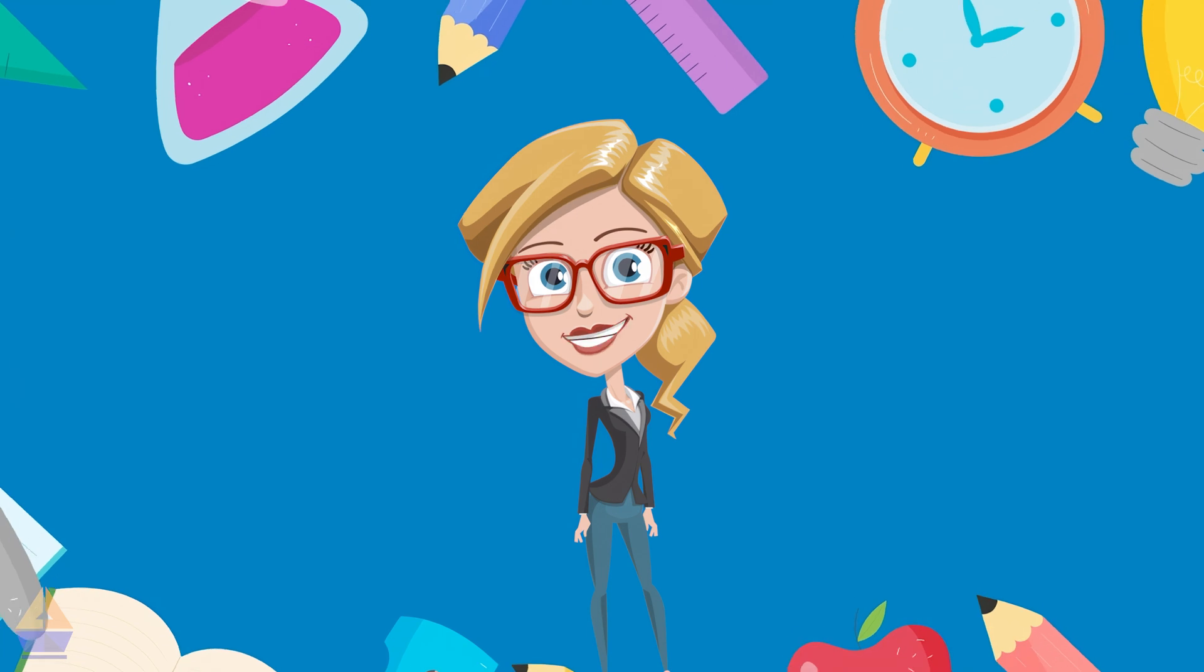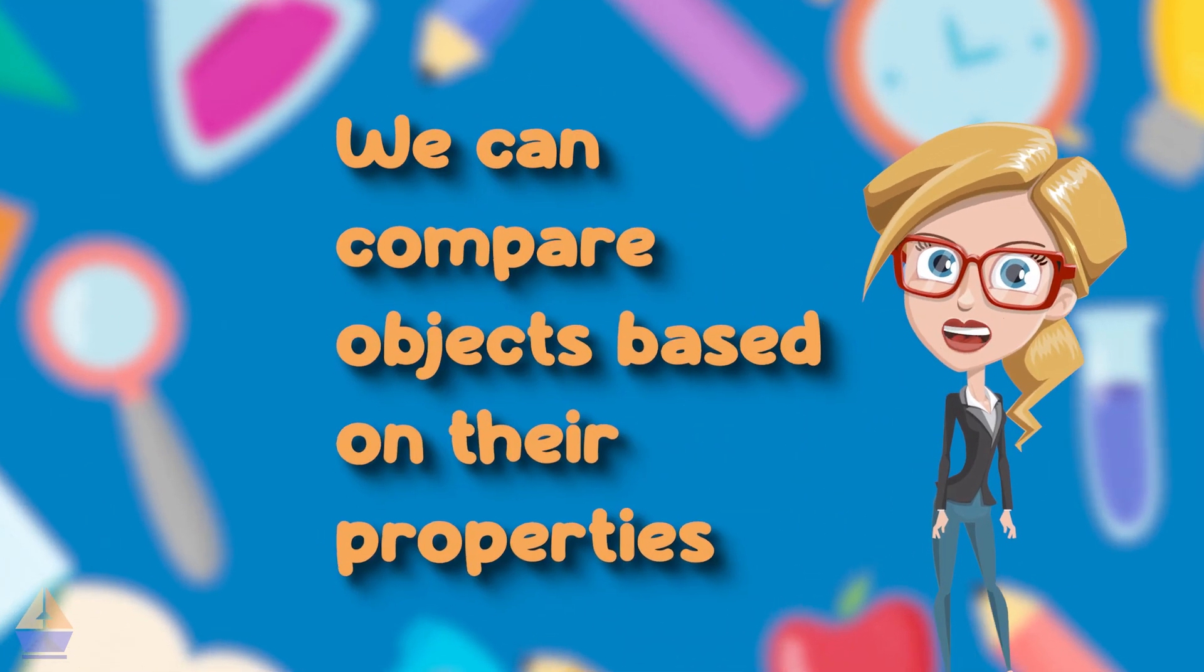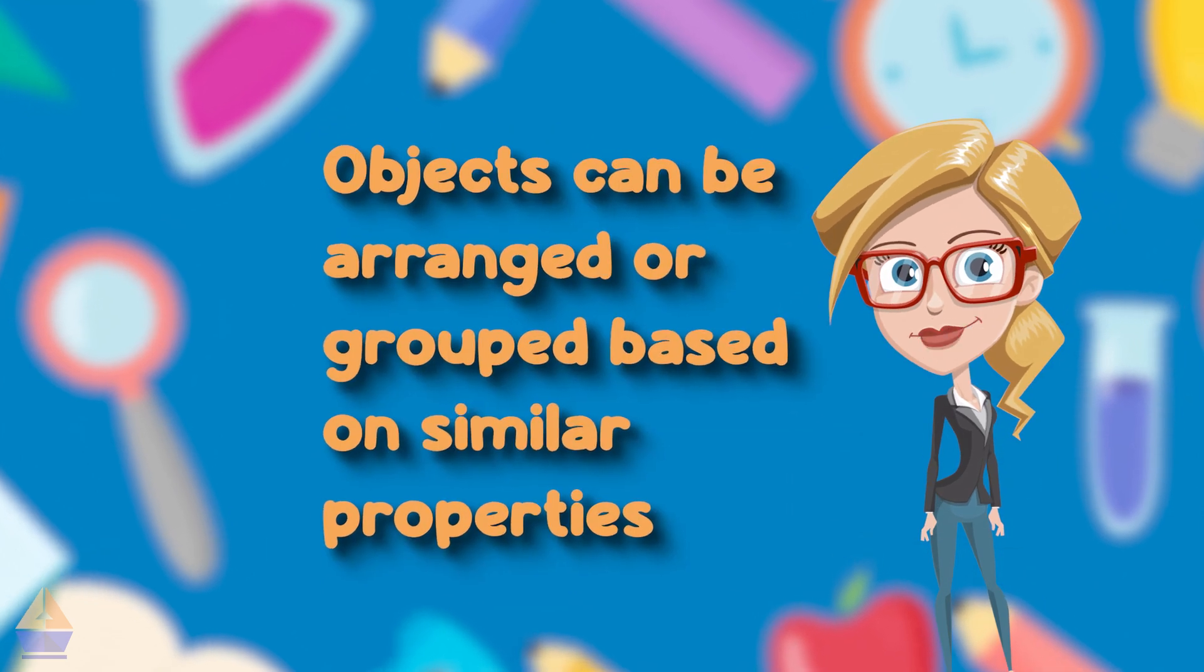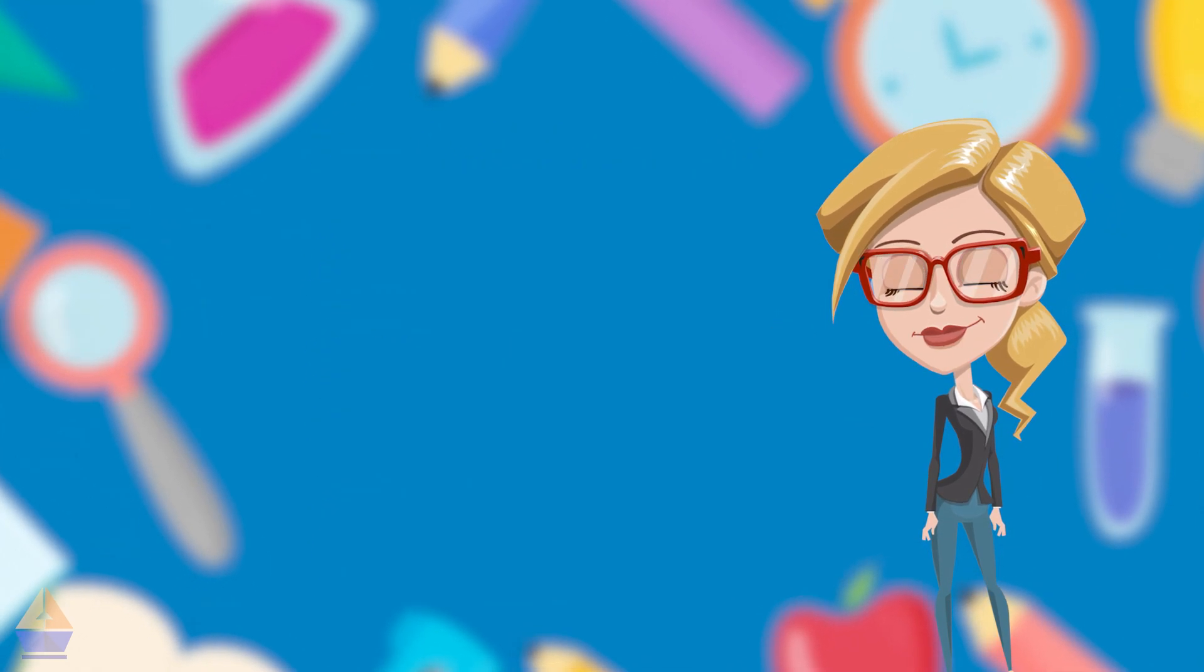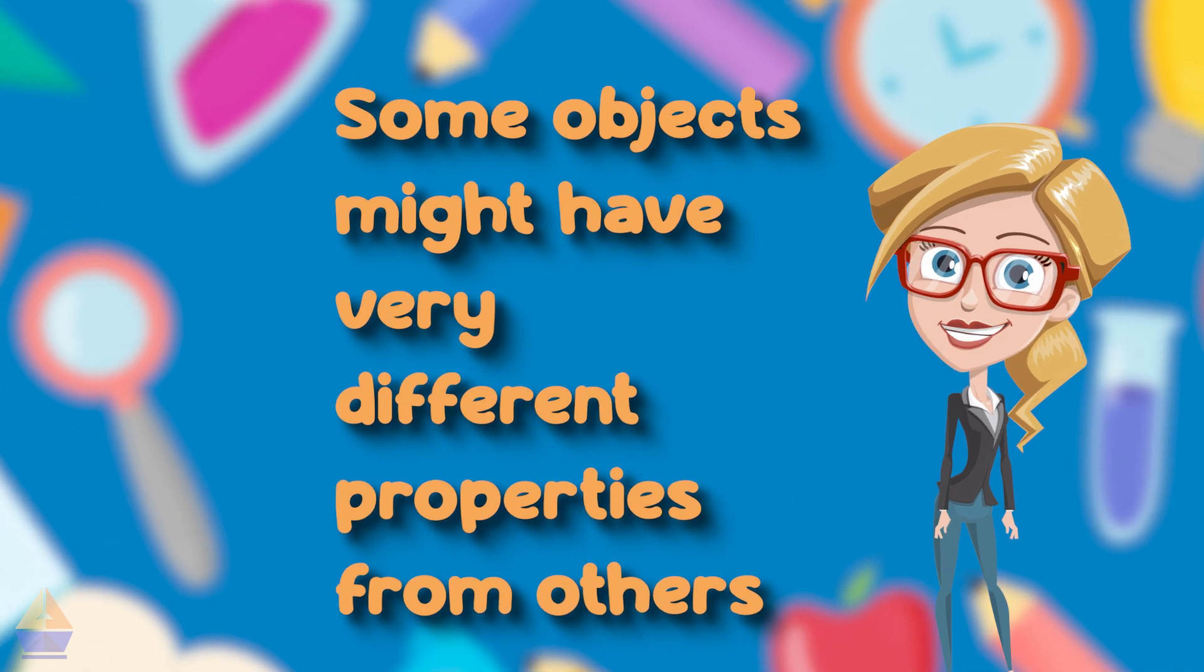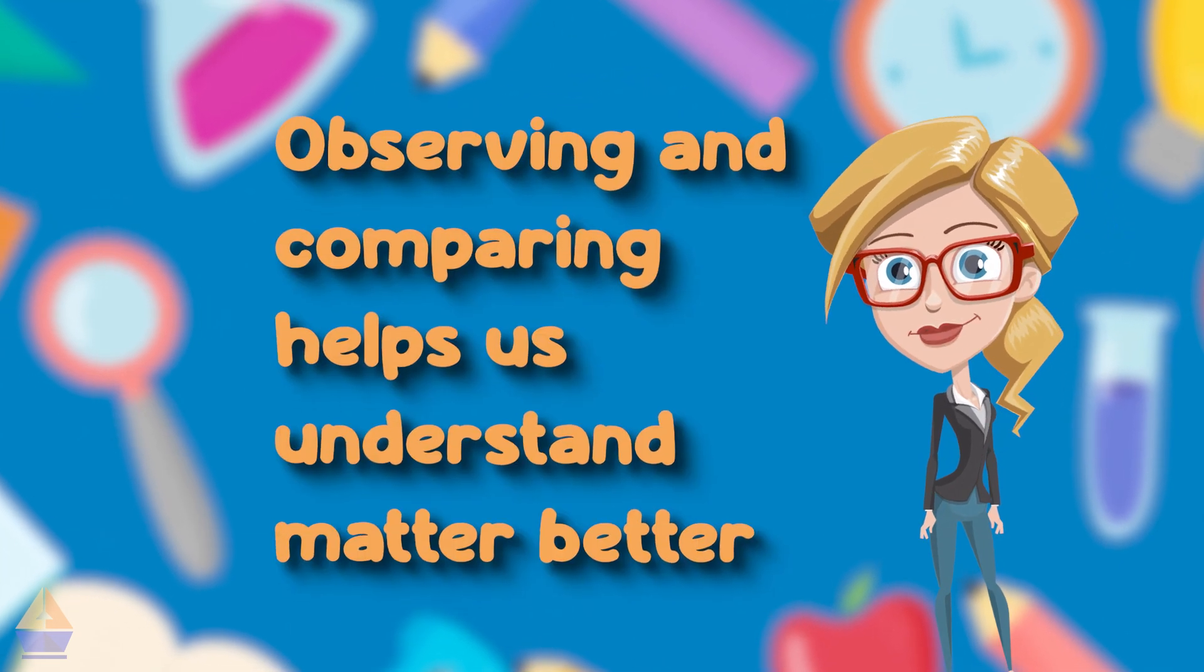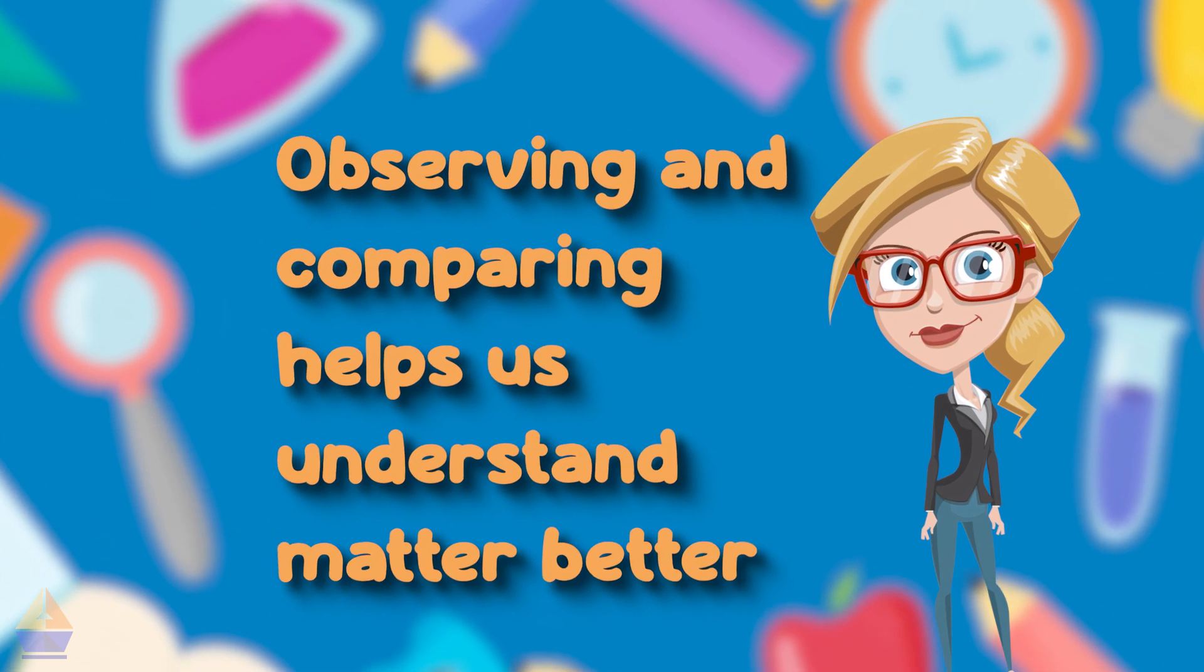Let's do a quick recap of what we learned today. One, we can compare objects based on their properties. Two, objects can be arranged or grouped based on similar properties. Three, some objects might have very different properties from others. And four, observing and comparing helps us understand matter better.